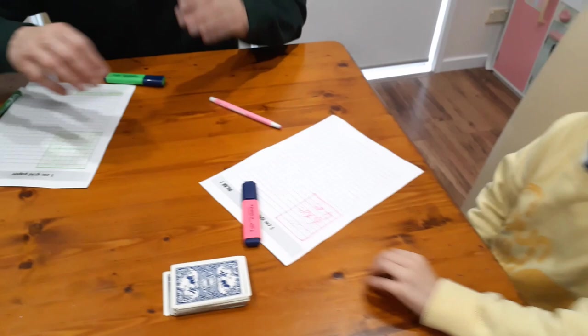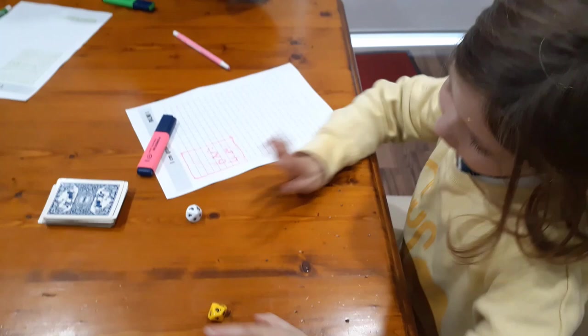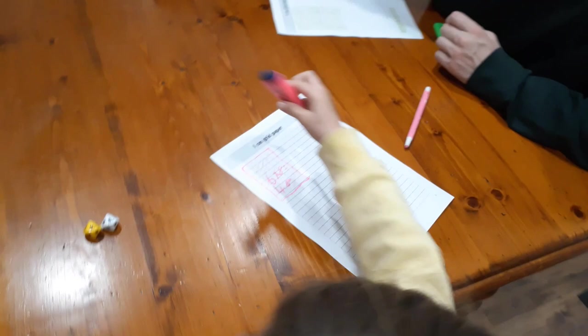One times nine equals nine. And color, color, color. All right, and that goes in the discard pile. Now you use the dice.